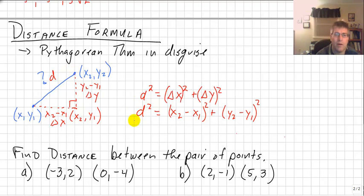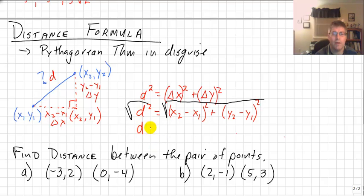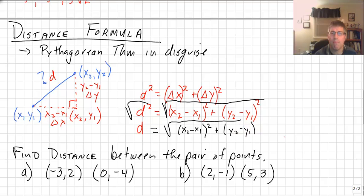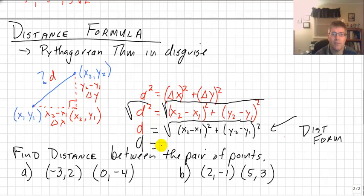I don't really want d squared — I want d. So in order to find d, I take the square root of both sides. The square root of d squared is d, giving us d equals the square root of x2 minus x1 squared plus y2 minus y1 squared. This is our distance formula, which is really the Pythagorean theorem, or the square root of the change in x squared plus the change in y squared.